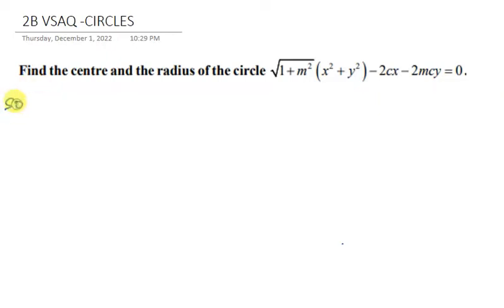For the solution, we write this in the general form of a circle: x squared plus y squared plus 2gx plus 2fy plus c equals 0.